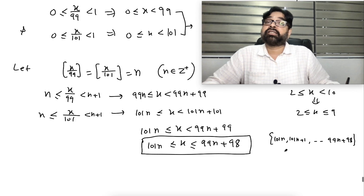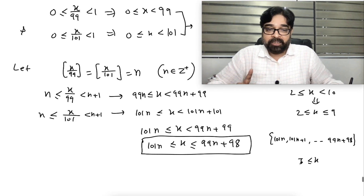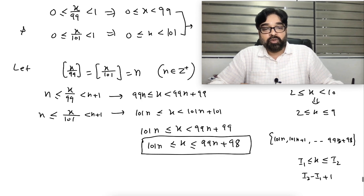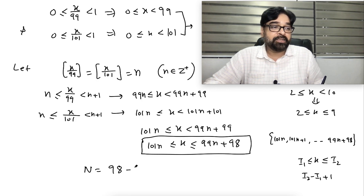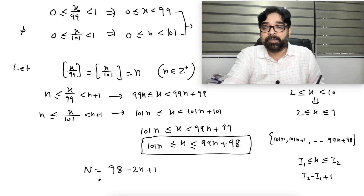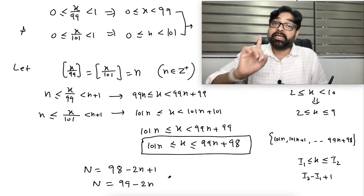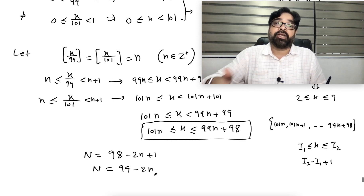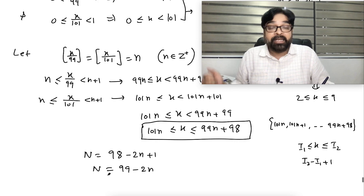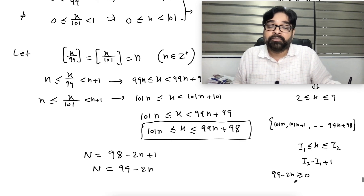Since x is an integer less than 99n+99, x can go up to 99n+98. Whenever x lies between two integers i1 and i2, the number of integers is i2 minus i1 plus 1 — it's just counting. So here, x lies between 101n and 99n+98.